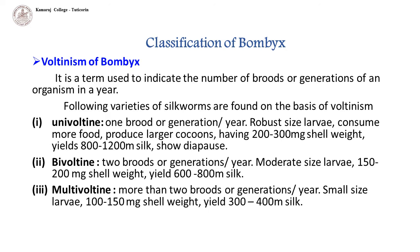Following varieties of silkworms are found on the basis of voltanism. Univoltine: organisms having one brood or generation per year. Their larvae are of robust size and consume much more food. These produce larger sized cocoons having 200 to 300 mg shell weight. Such cocoons yield 800 to 1200 meters of silk. They show diapause.